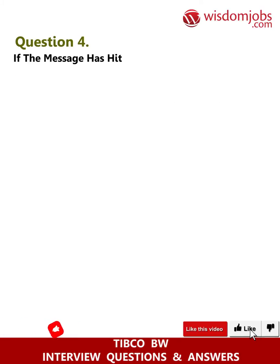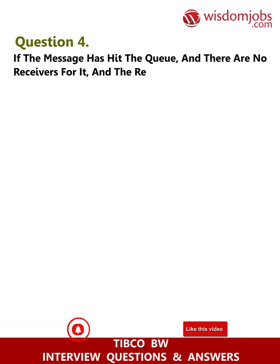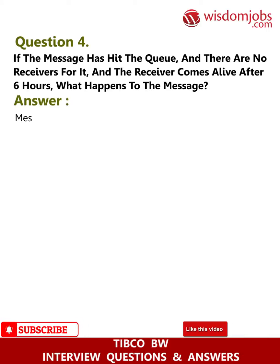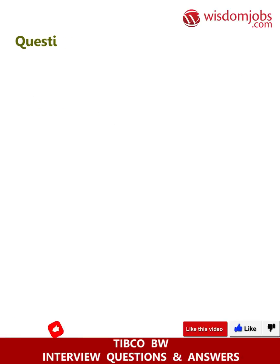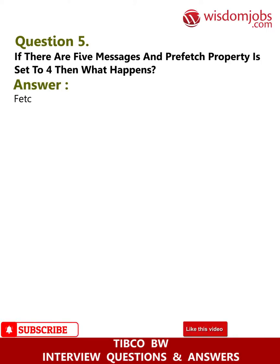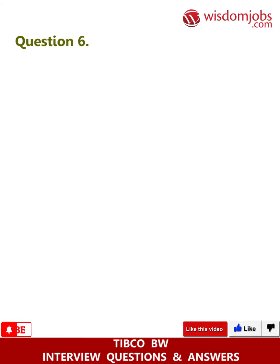Question 4: If a message has hit the queue and there are no receivers for it, and the receiver comes alive after 6 hours, what happens to the message? Answer: The message stays on the queue. Question 5: If there are 5 messages and the prefetch property is set to 4, what happens? Answer: It fetches 4 messages.